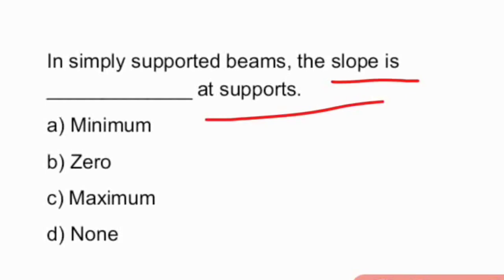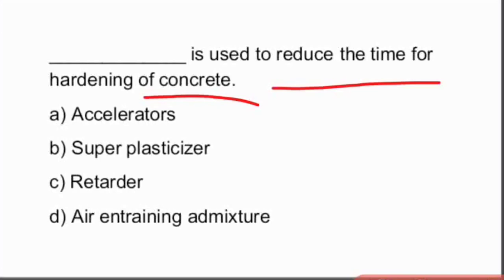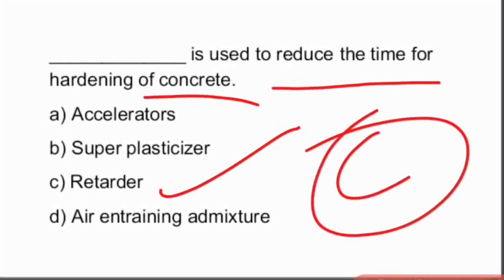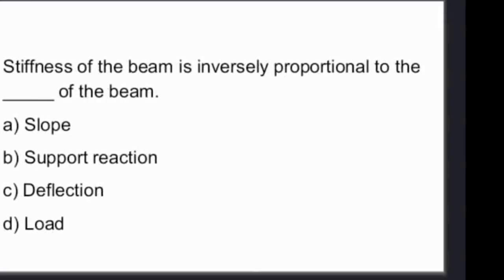In simply supported beams, the slope is maximum at the mid span, and the deflection is also maximum at the mid span. A substance used to reduce the time of hardening of concrete is called a retarder — option C. The stiffness of the beam is inversely proportional to the deflection of the beam.